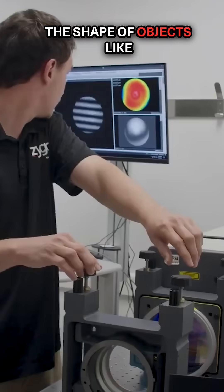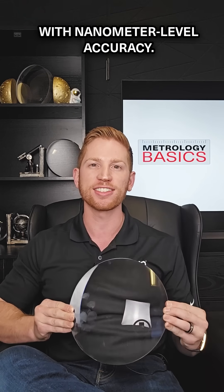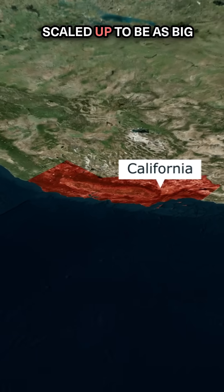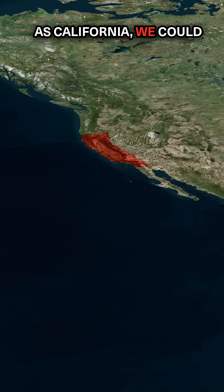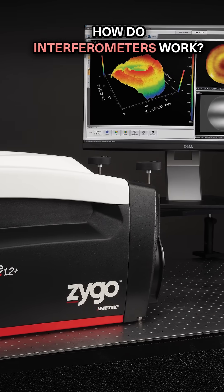Interferometers measure the shape of objects like optical lenses and windows with nanometer-level accuracy. If a 2-inch window was scaled up to be as big as California, we could measure a defect the size of a dime. That's pretty crazy, but how do interferometers work?